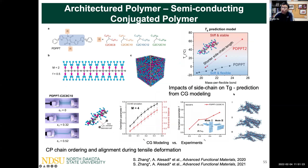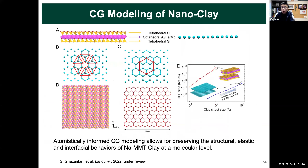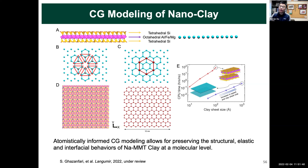We are also developing a glass transition model for semiconducting conjugated polymers, which is important for practical flexible electronic applications. Additionally, using the energy renormalization approach — similar to the graphene system — we are developing a coarse-grained model for nanoclay and clay-polymer nanocomposites. This is ongoing model development work for the nanoclay sheet systems.